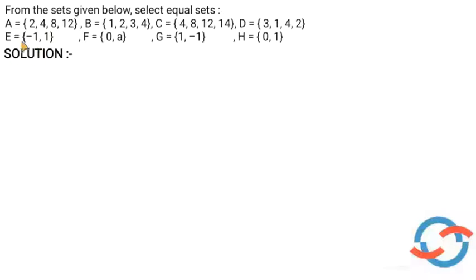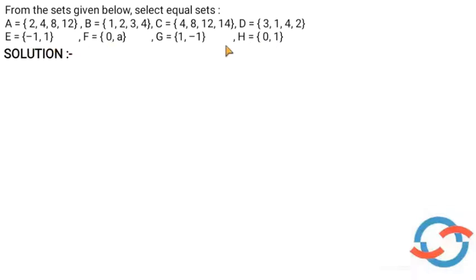So A is equal to D. Now, E is equal to 2, F is 2, G is 2, H is 2. These four sets have different values, that's why A is not equal to E, F, G, and H.